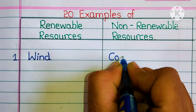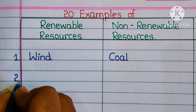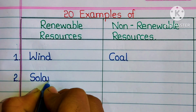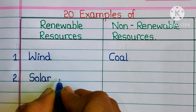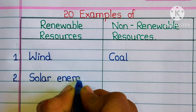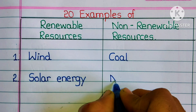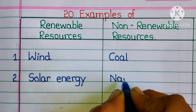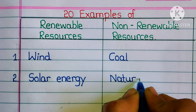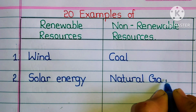First one: renewable resource is wind, and non-renewable resource is coal. Second one: renewable resource is solar energy.